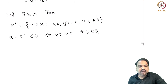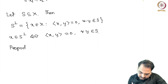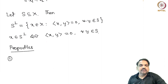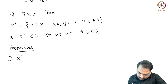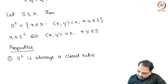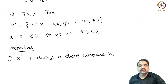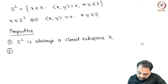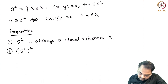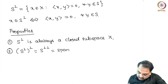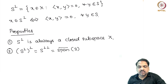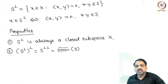Using this definition we can obtain a few important properties. We started with S to be a subset of X — we do not know whether it is a subspace or not — but we can always show that S⊥ is always a closed subspace of X. This can be shown by using the continuity of the inner product in both variables. The second property is that (S⊥)⊥, written as double perp, is nothing but the closure of the span of S — that is, the smallest closed subspace containing S.